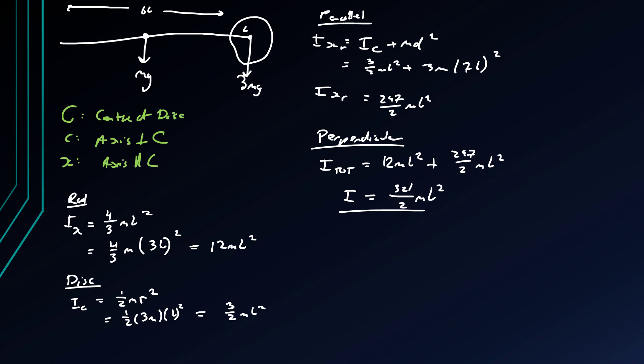So how are we going to work it from here? Well we know that the periodic time is 2 pi times the square root of I divided by mgh. Now h refers to the center of gravity.